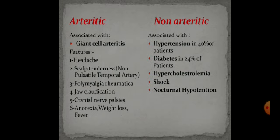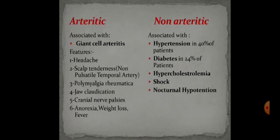Friends, think again. After looking at the features of arthritic and non-arthritic AION, in our given case the patient has hypertension and hypercholesterolemia, positive RAPD, and normal extraocular motility. Therefore, the given case has a diagnosis of AION, non-arthritic type.